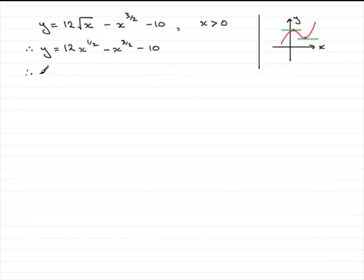Now we need to differentiate this, find dy by dx, differentiate it with respect to x. And for terms like this, what we need to do is multiply the power by the number at the front and subtract 1 from the power. So we do 12 times a half, which is 6, subtract 1 from the power and we get x to the power minus half.